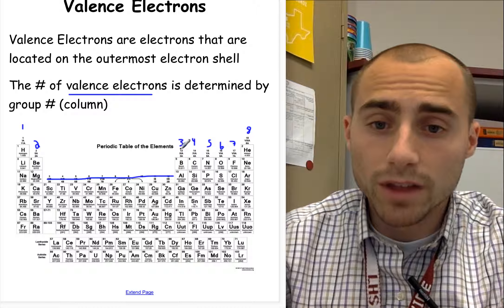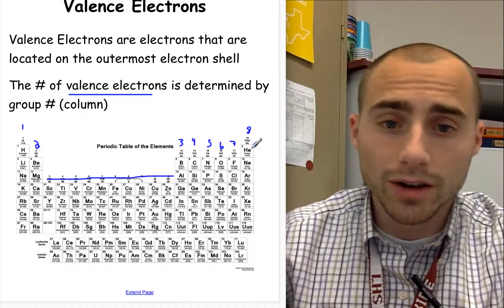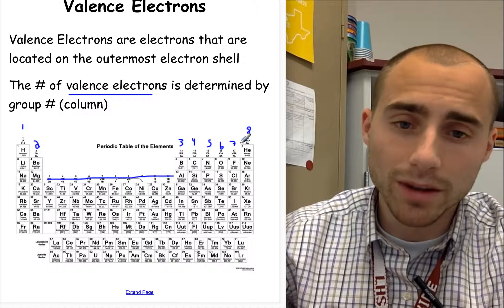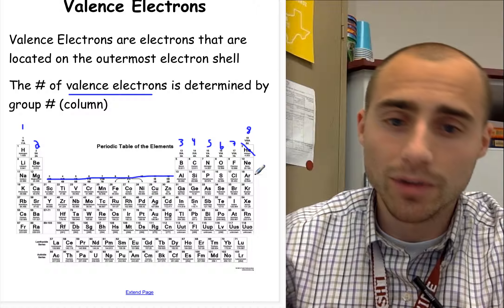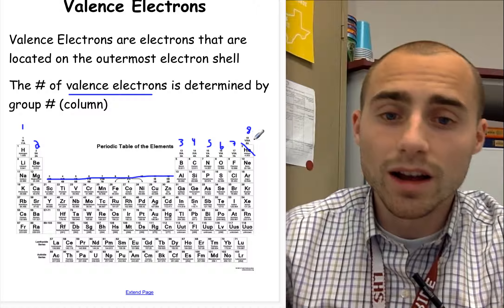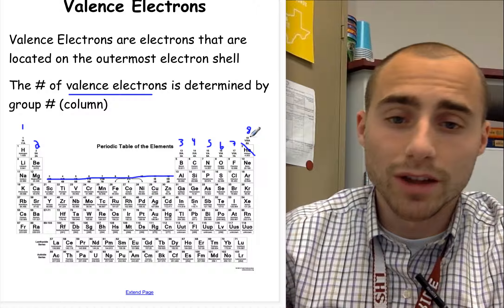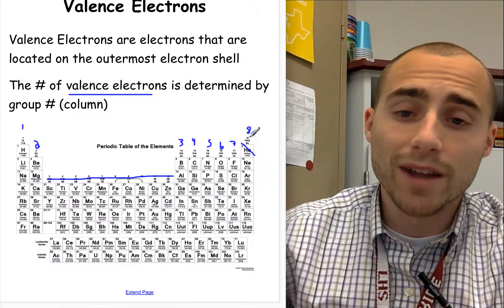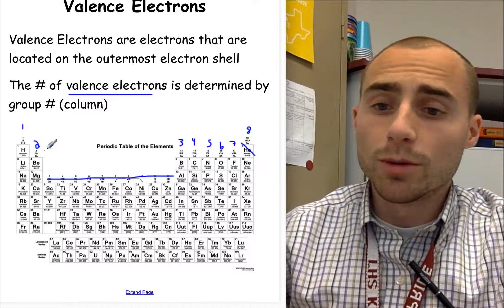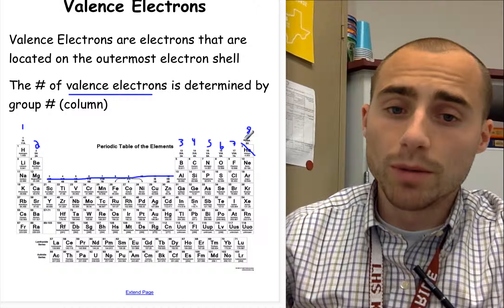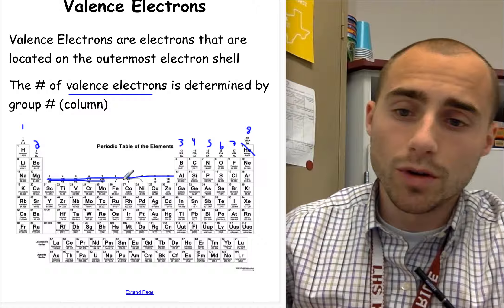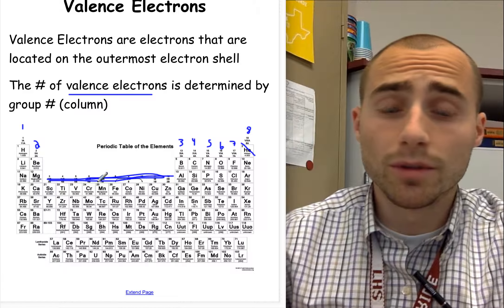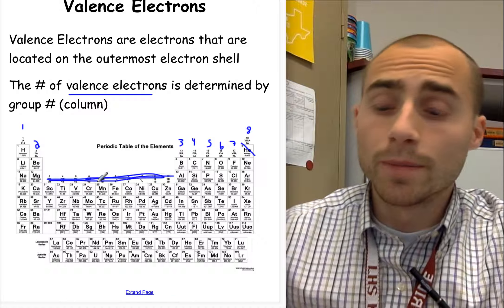So aluminum will have three valence electrons. Helium is an exception. Neon will have eight valence electrons. Argon will have eight valence electrons, and we determine that by the group number. We're just kind of ignoring the transition metals in terms of valence electrons.